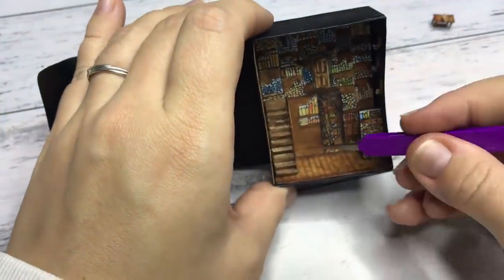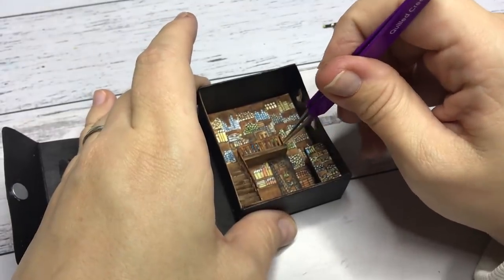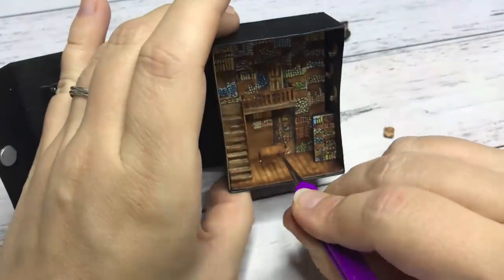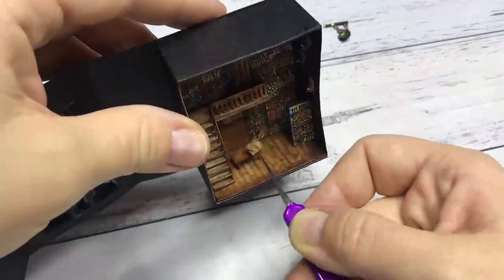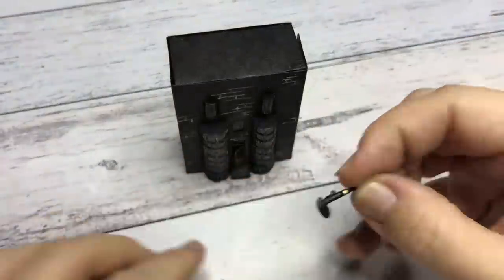To put this all together I glued the stairs and the landing inside the shop. I placed the book on the table and finally glued the Ollivander sign to the front of the matchbox.